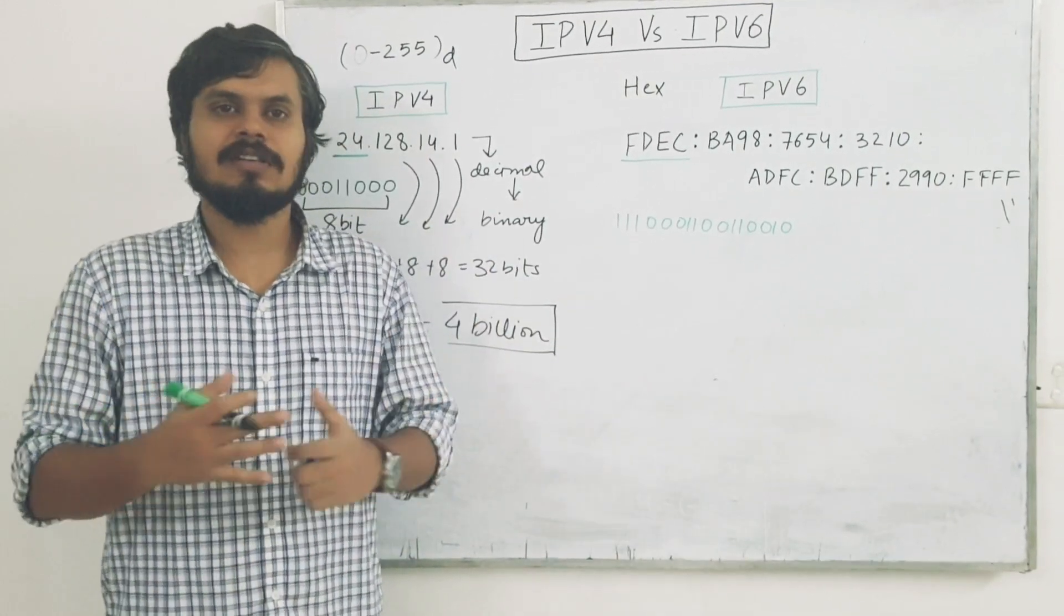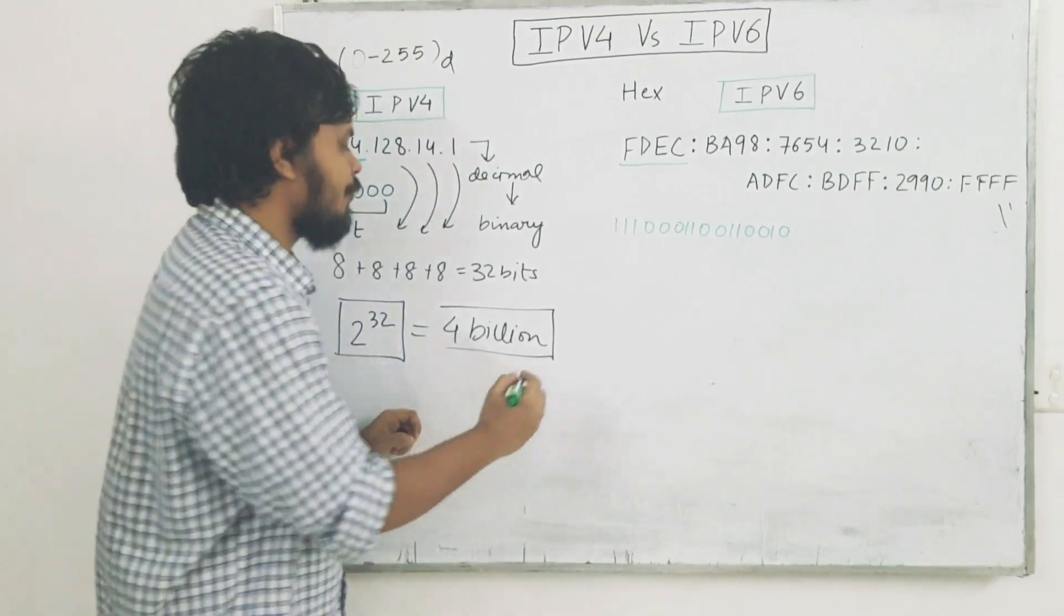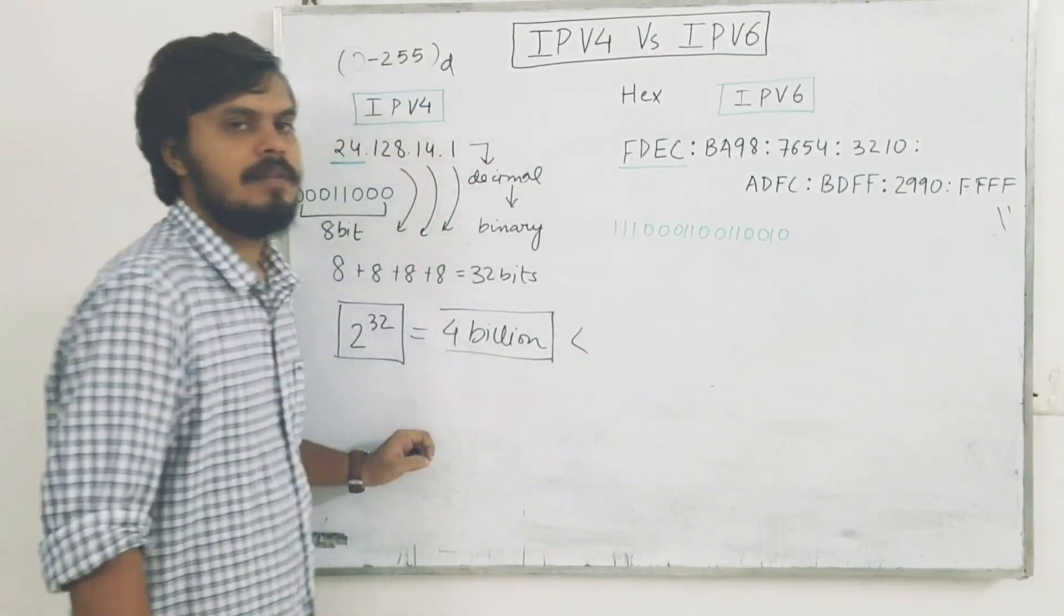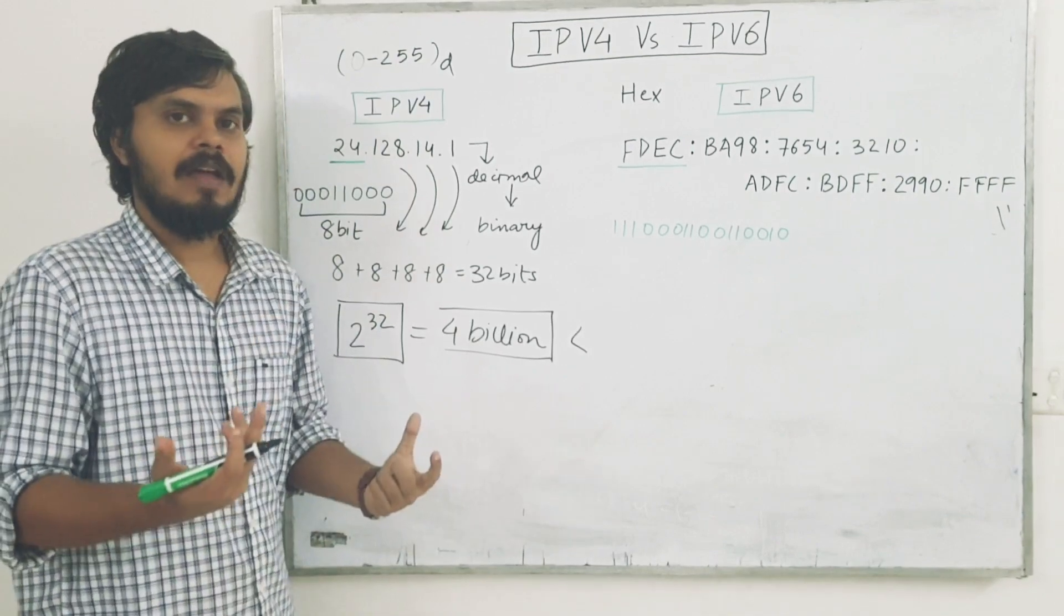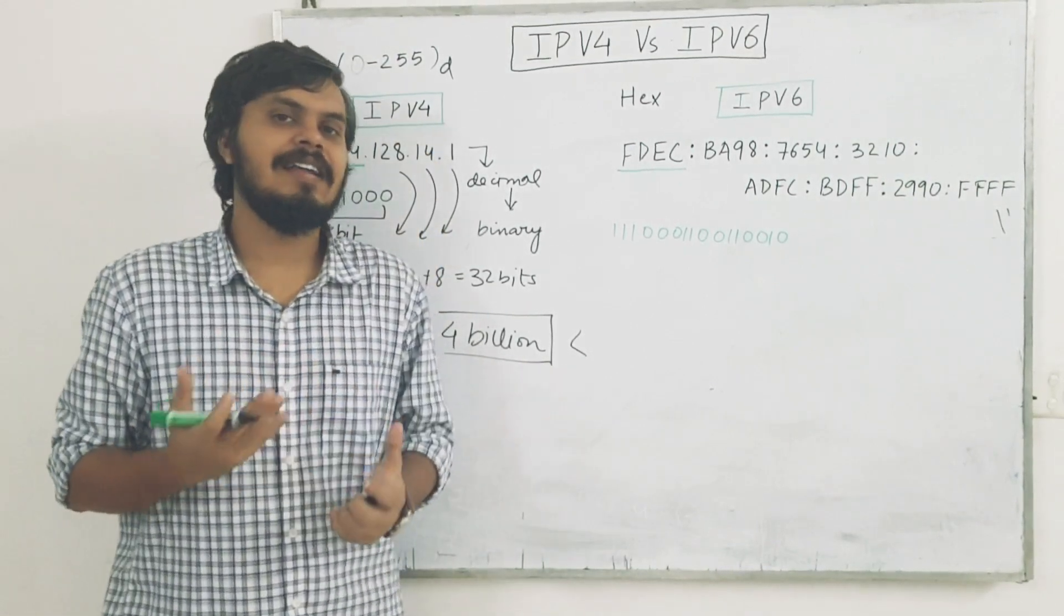Like, tube lights, fans, fridge, washing machine, everything is connected to the internet. And because of that, we have exceeded this number, 4 billion. And because of that, IPv4 is not useful.